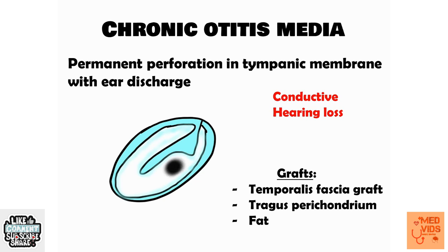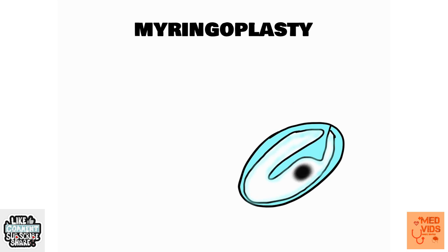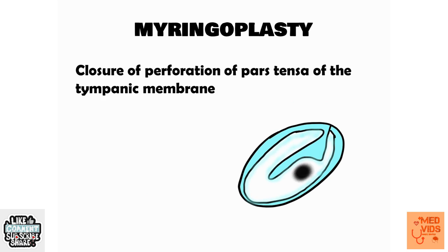Myringoplasty is closure of perforation of the pars tensa of the tympanic membrane. If there is a perforation in the tympanic membrane, the person won't be able to hear normally because there will be conductive hearing loss — the sound waves cannot be conducted normally as they would through an intact tympanic membrane.